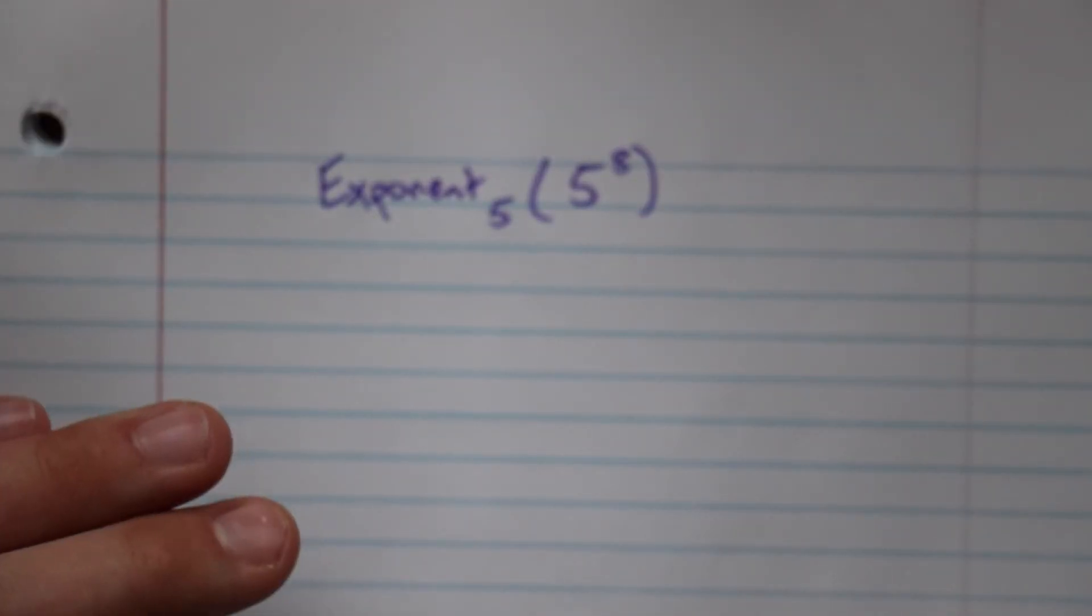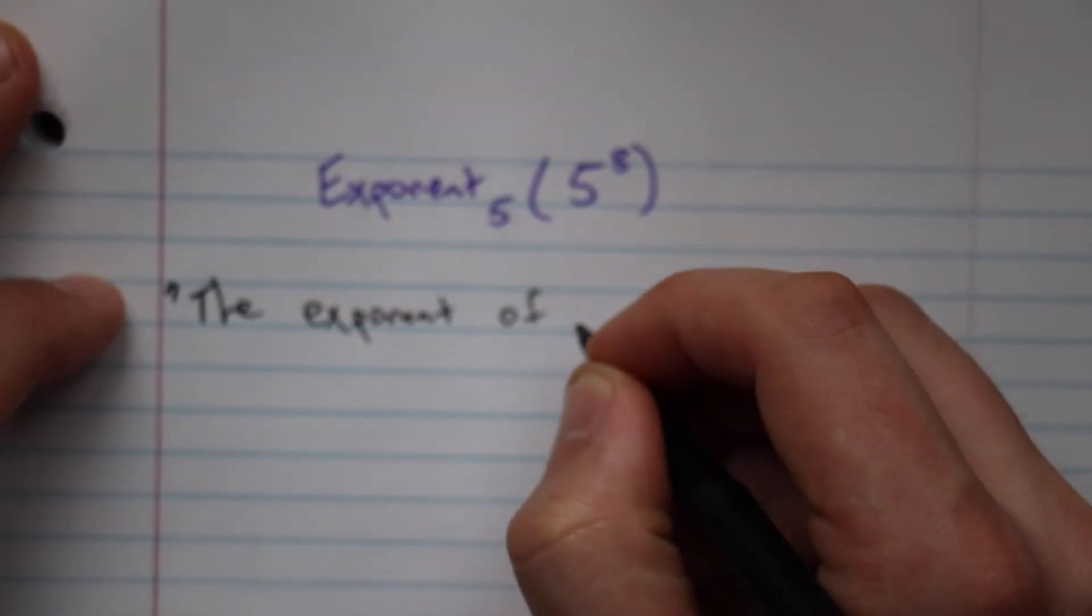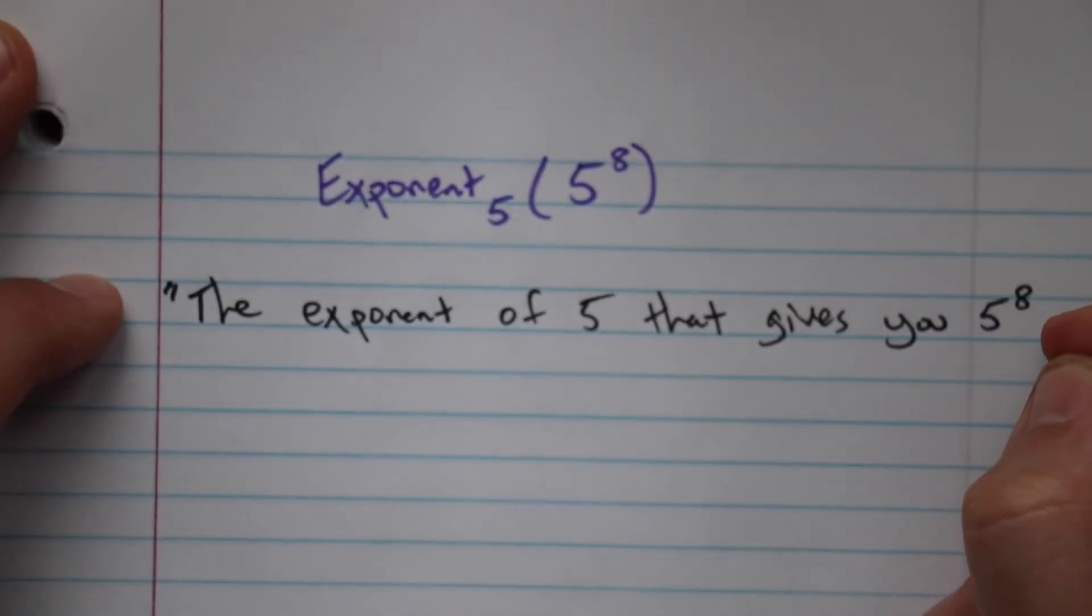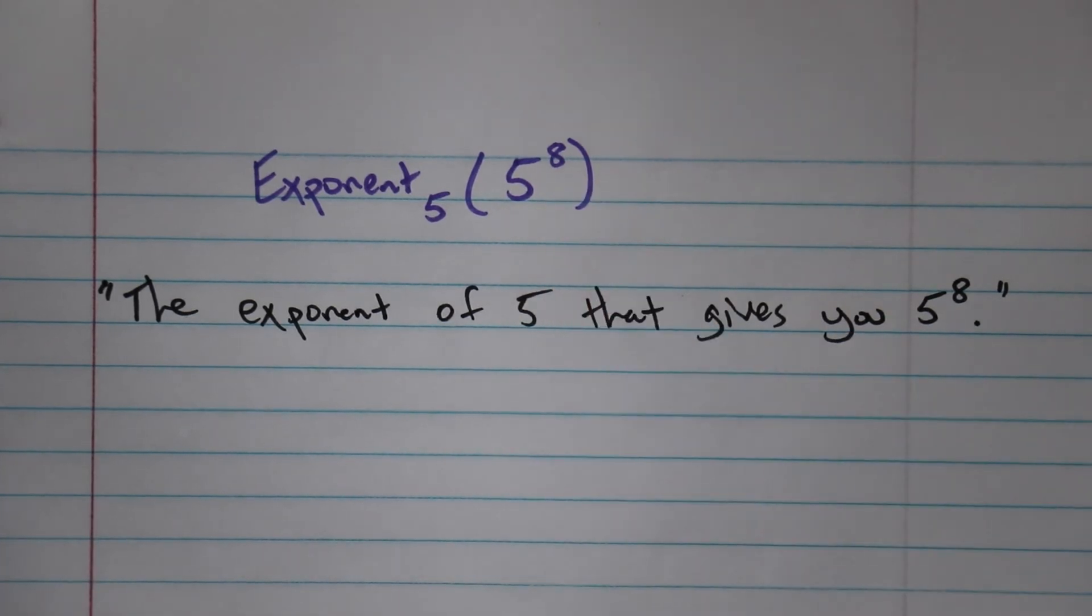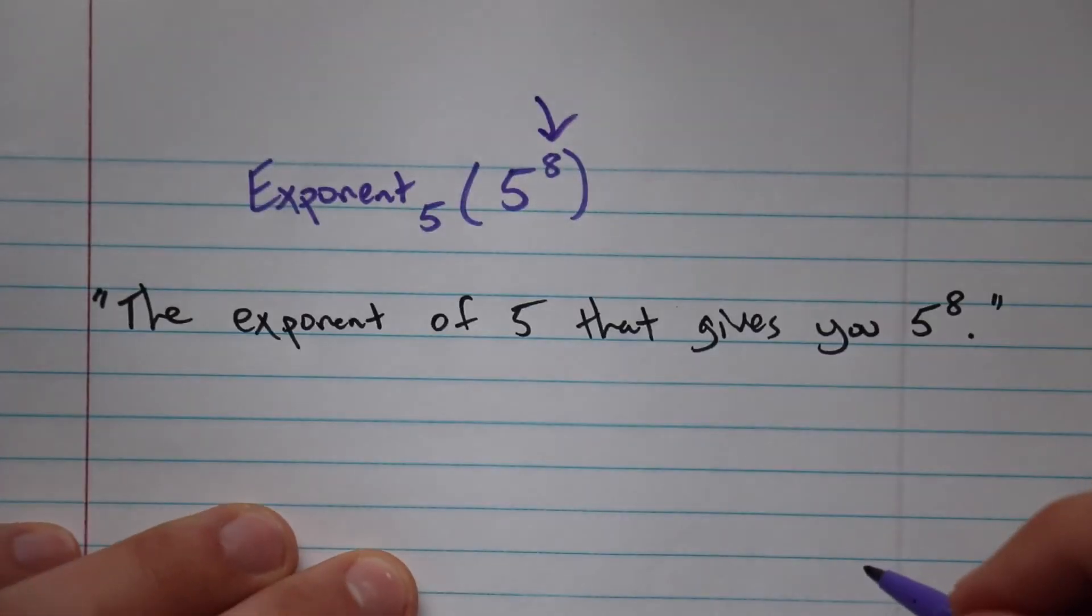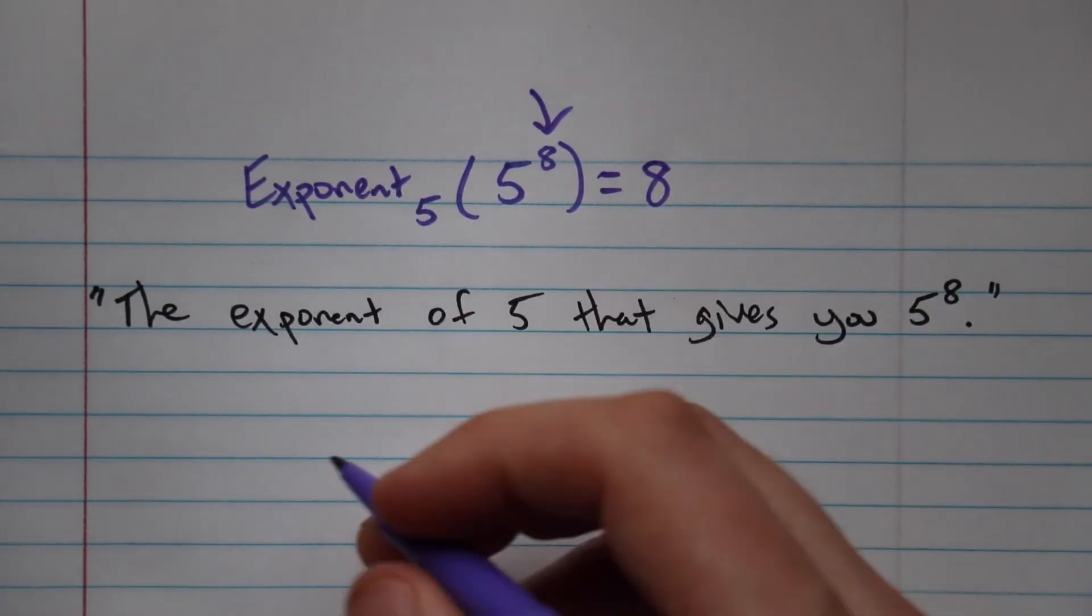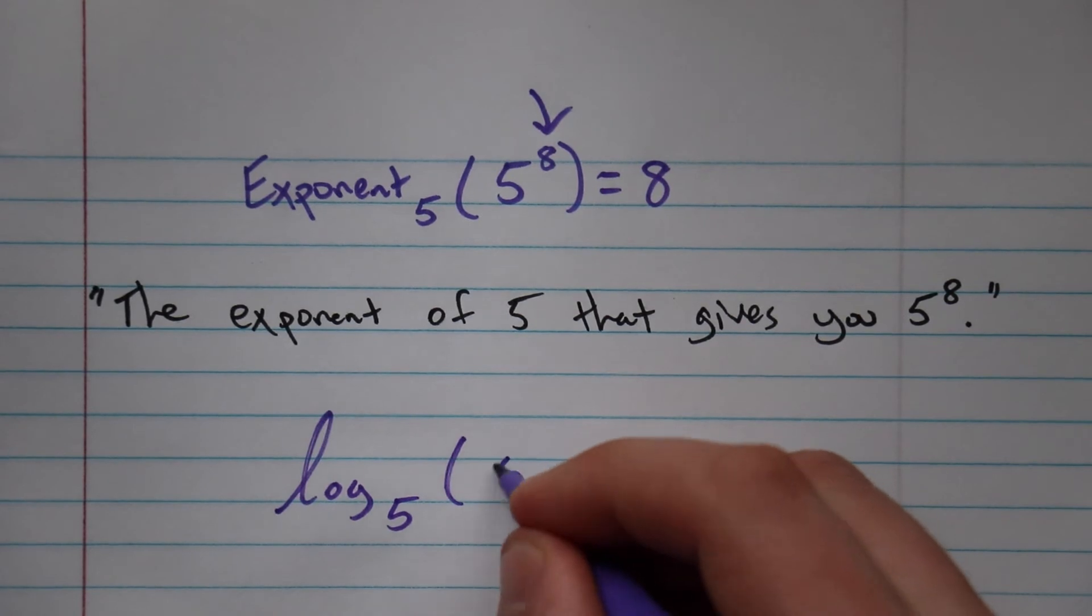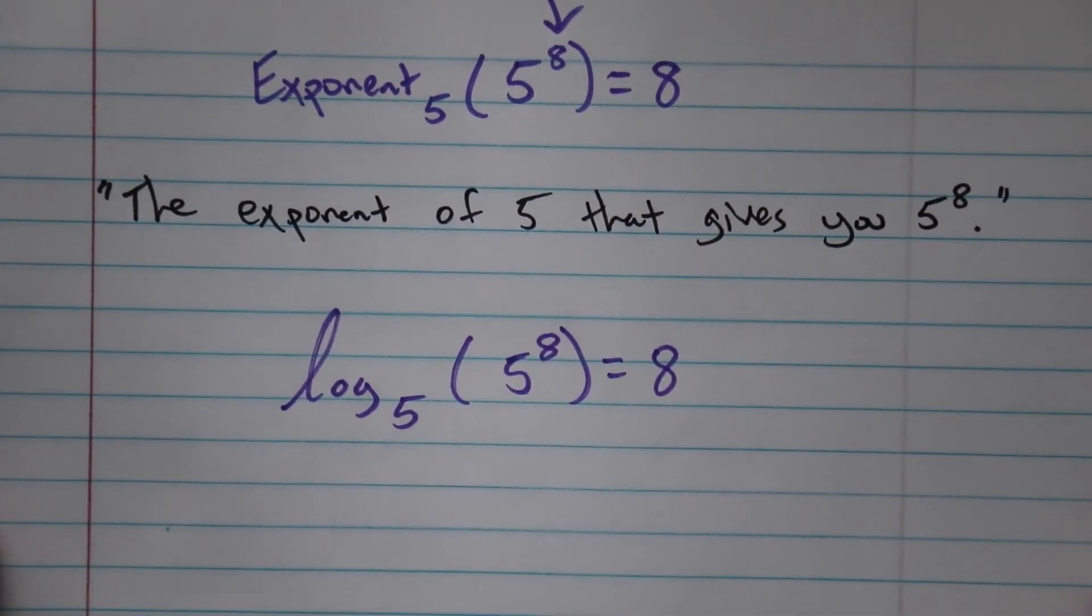It's kind of a silly example, but it's still worthwhile. So this says the exponent of 5 that gives you 5 to the 8th. Think about that for a second. The exponent of 5 that gives you 5 to the 8th. Well, what exponent gives you 5 to the 8th? That exponent does, so it's 8.